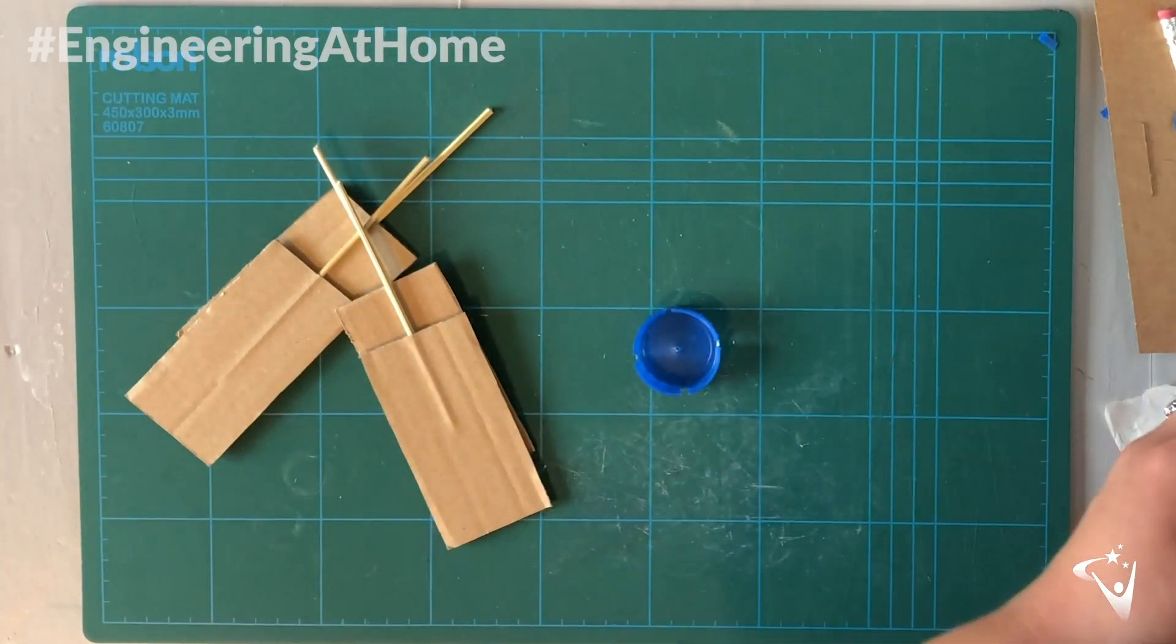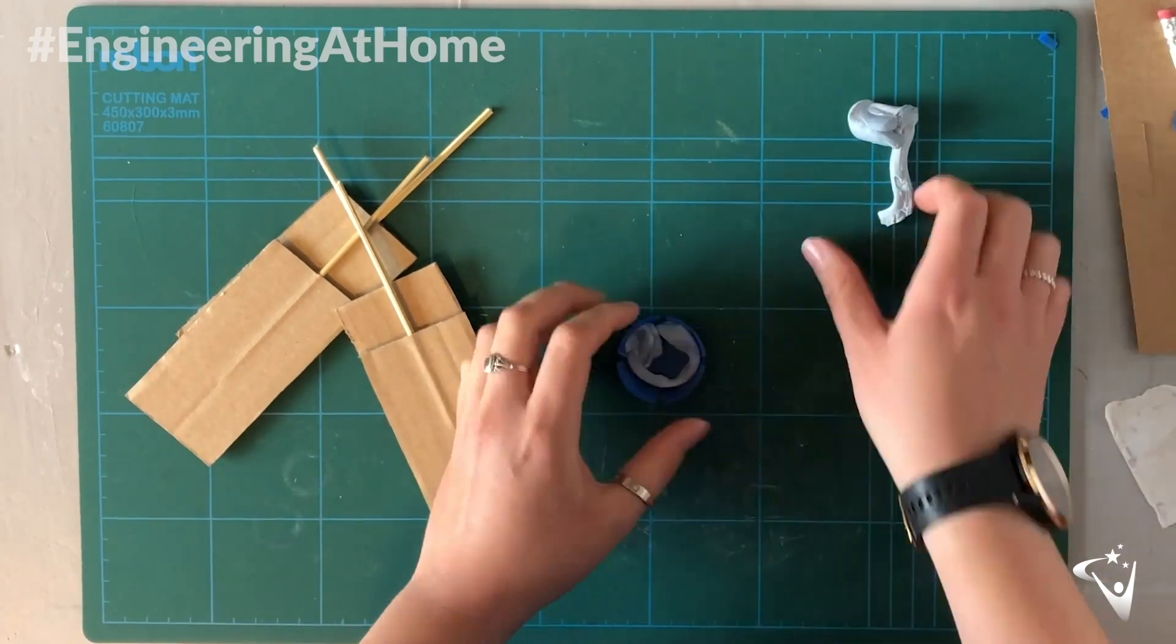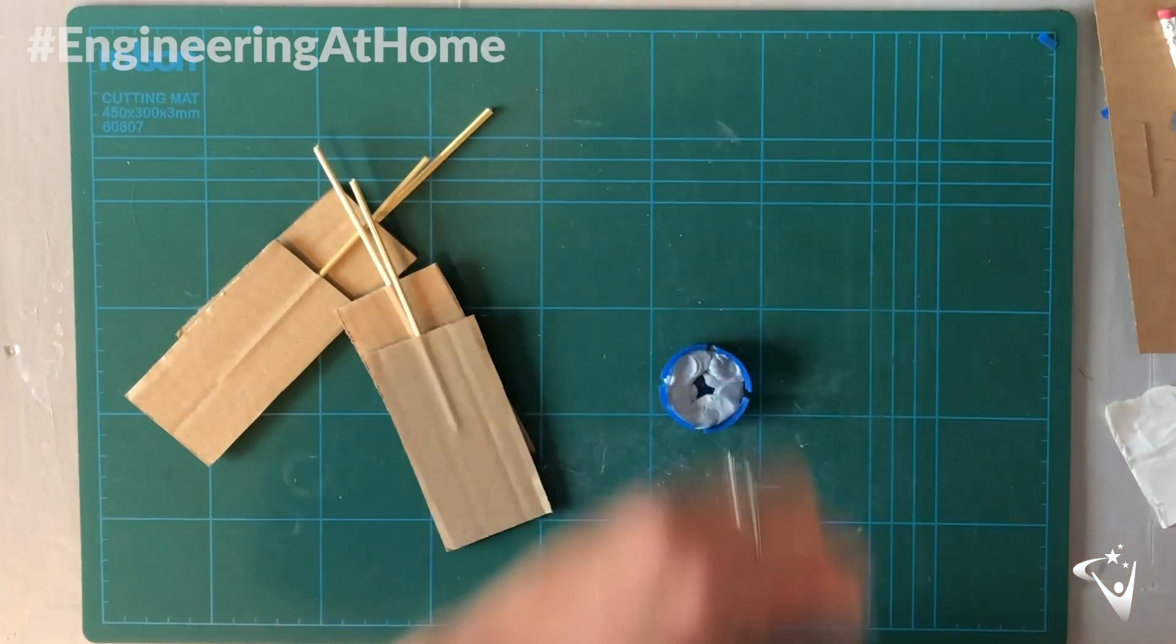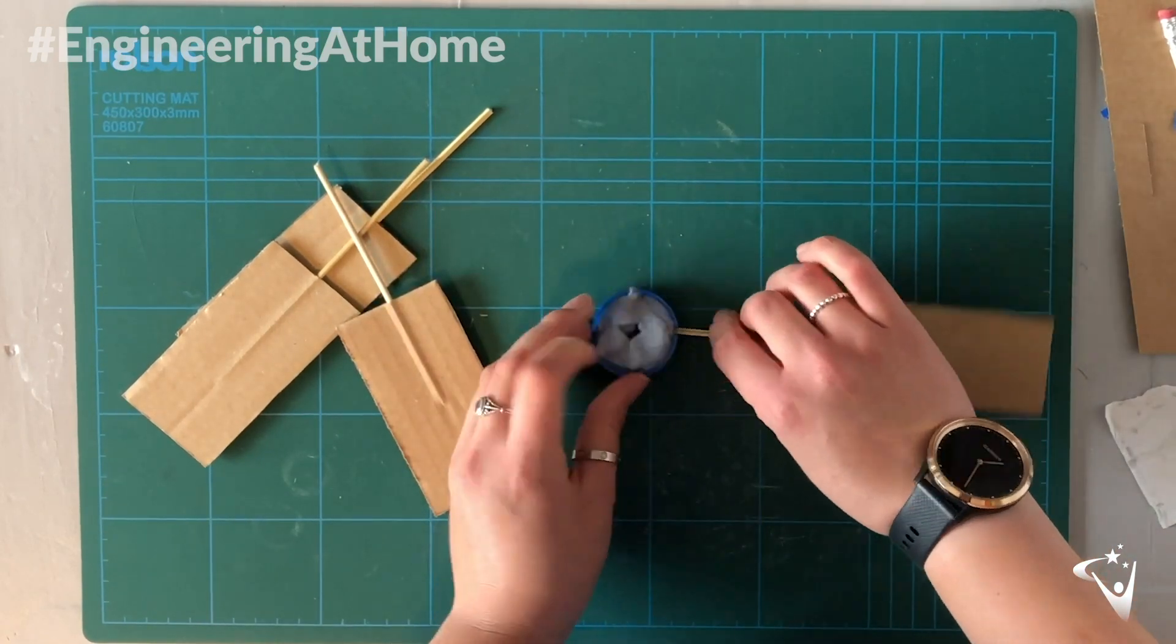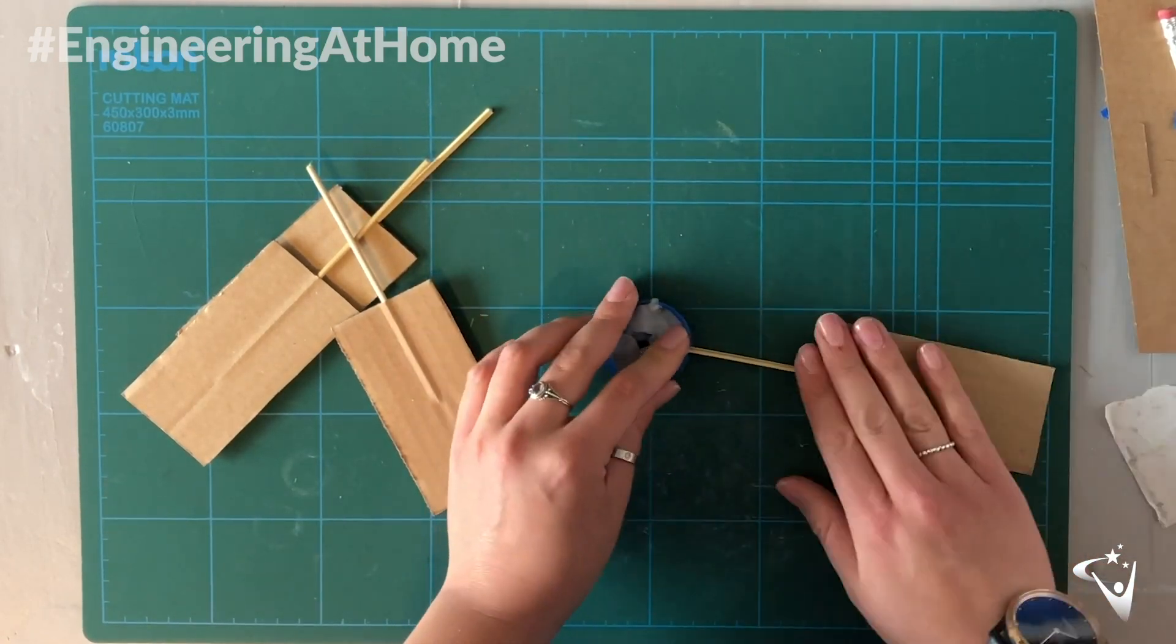To secure the blades in place you want to fill the lid with blue tack. Then you can push the skewer into the lid through the slot into the blue tack and this should hold them in place nicely.